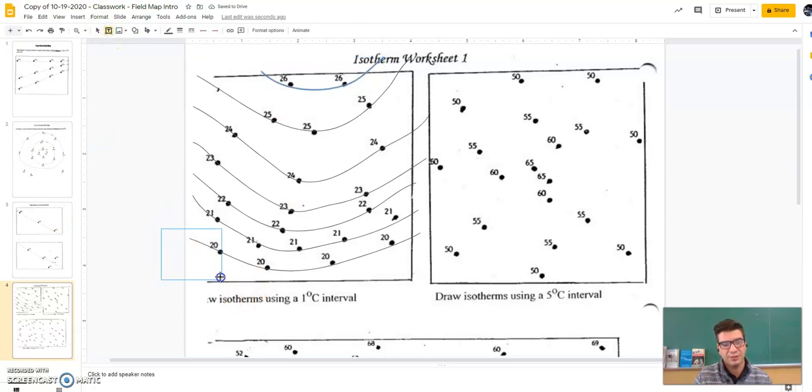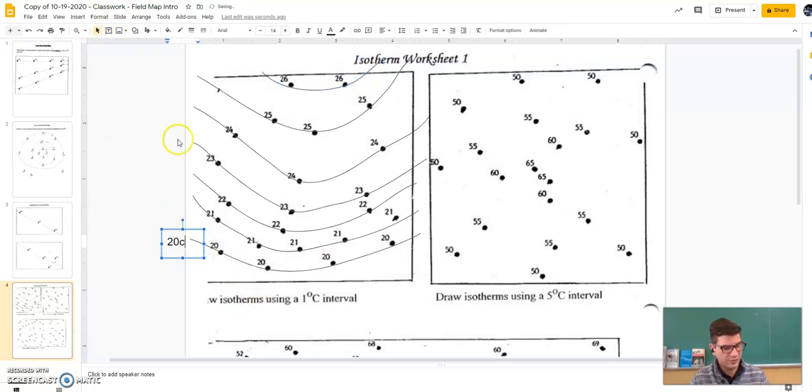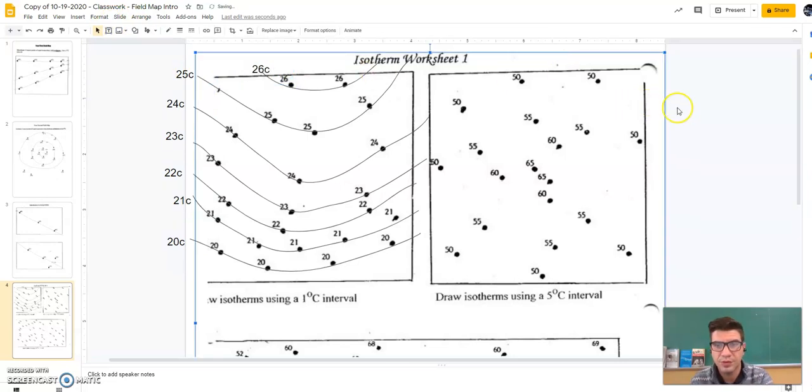I would then need to label each, 20C, 21C, 22C. So, there's that one.